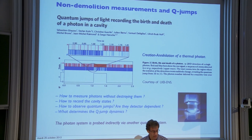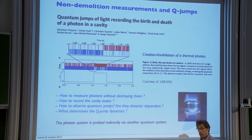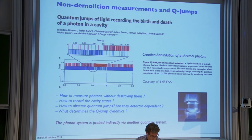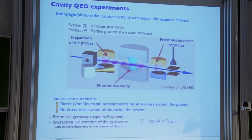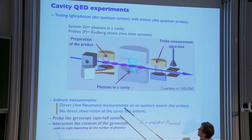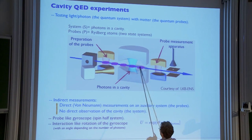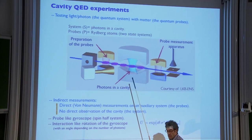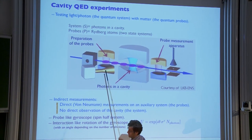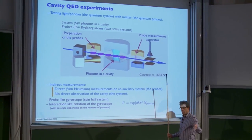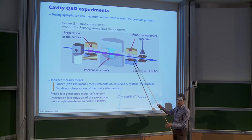The way they observe the cavity without destroying the system inside is using an indirect procedure. They send atoms through the cavity and observe the atom — they do indirect measurements and never measure the cavity directly. The setup has a cavity prepared in a given state by injecting some electromagnetic field, then they prepare Rydberg atoms and send them through the cavity, and then do measurements on the atoms.